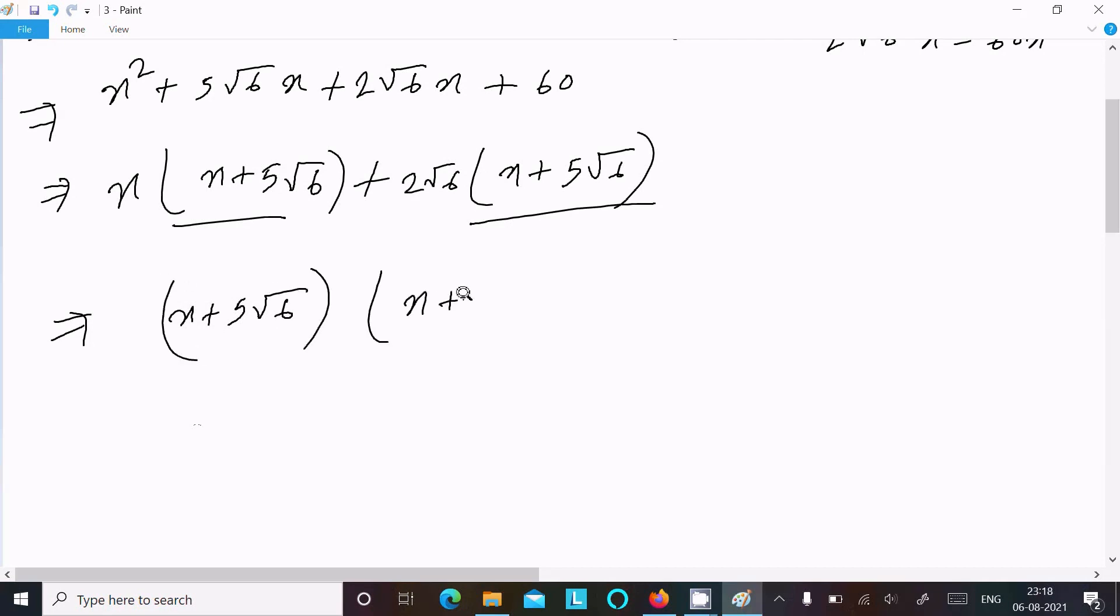Now here you can get (x + 2√6)(x + 5√6). So this is the answer of this question.